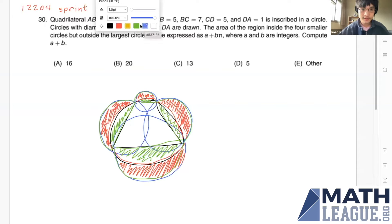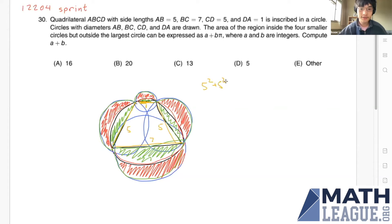And since we have the side lengths one, five, seven, and five, what we can do is observe that five squared plus five squared equals seven squared plus one squared.